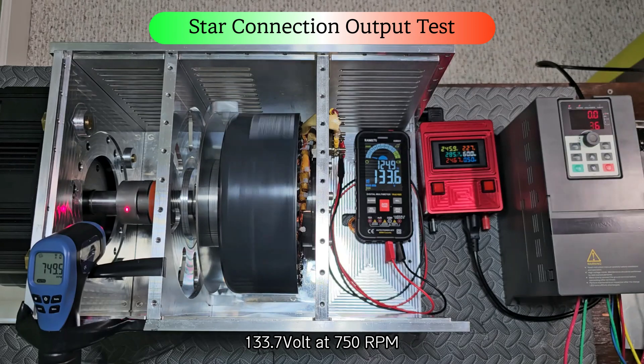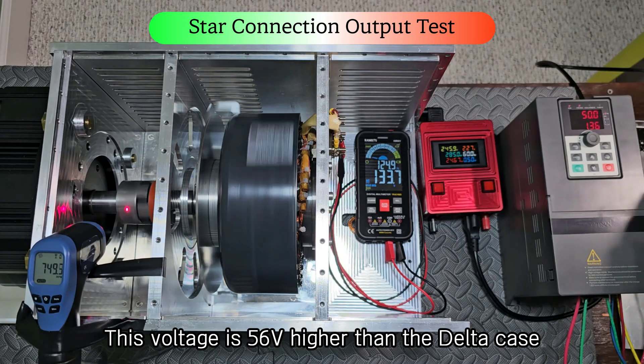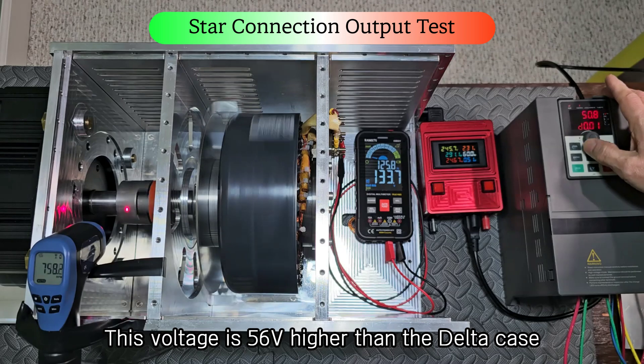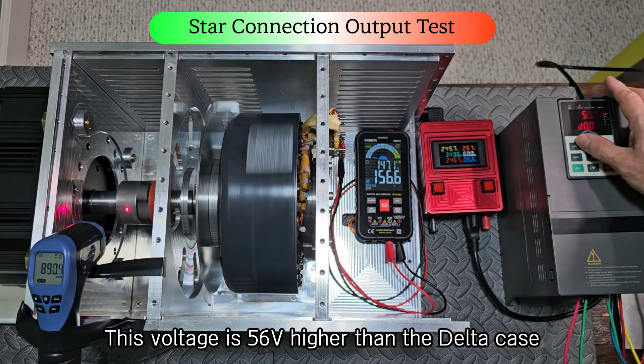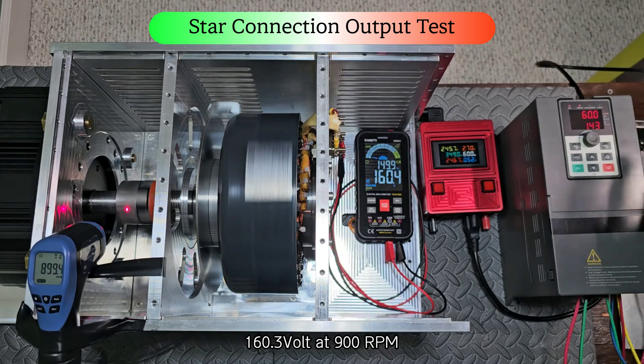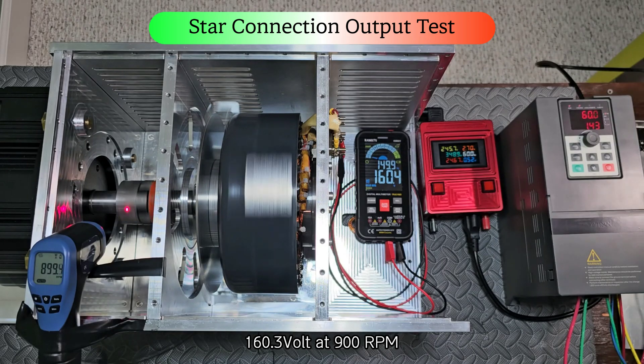Already reached 100 volt. 133.7 volt at 750 RPM. This voltage is 56 volt higher than the delta case. 160.3 volts at 900 RPM.